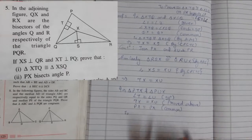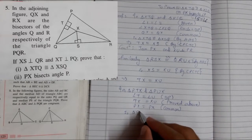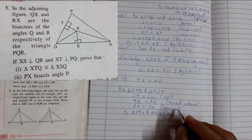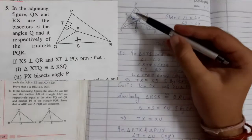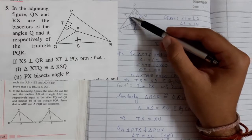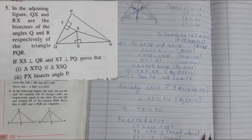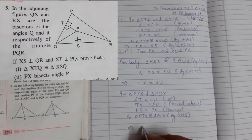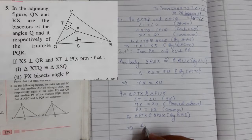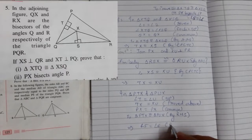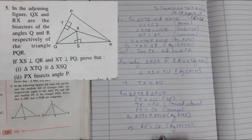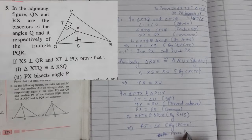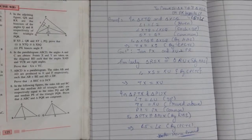So therefore these two triangles are congruent, triangle PTX congruent to triangle PUX by right angle hypotenuse side. Therefore angle 5 is equal to angle 6 by CPCTC. Hence proved. That's it for today.